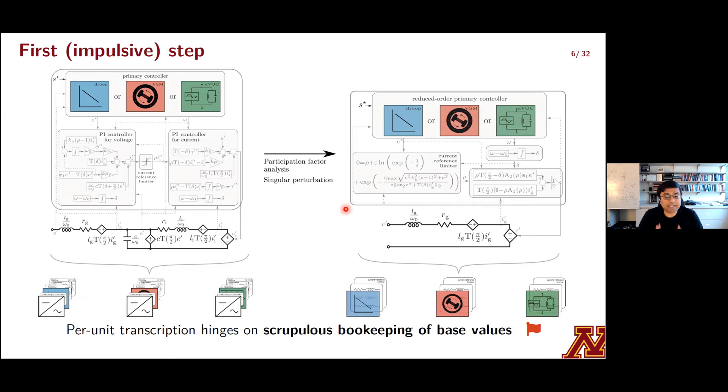And then through singular perturbation analysis, the model order was reduced to obtain the simpler model that's shown on the right over here. I want to point out that this reduced order model preserves structure to the extent possible. I mean that something that looks like an inductor on the left is going to look like an inductor on the right and not like a capacitor. In slides to come, I'm going to use the shorthands that are shown at the bottom here for illustrating the full order and the reduced order inverter models. So the fewer the layers in these icons, the lower the model order.